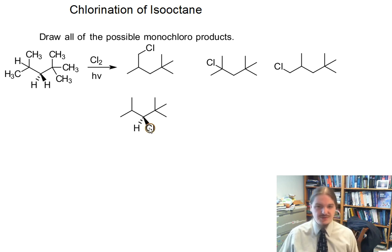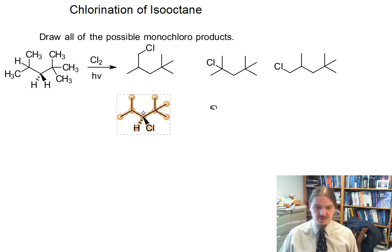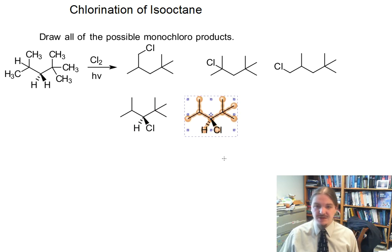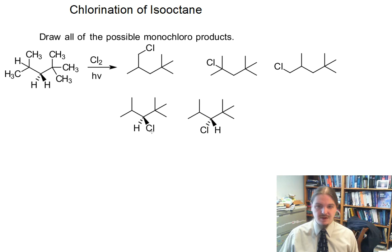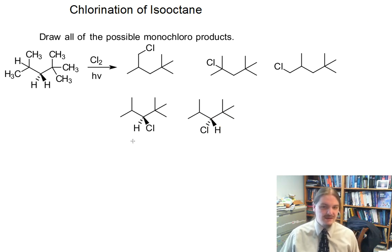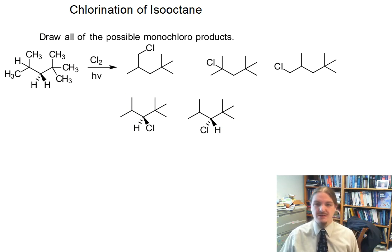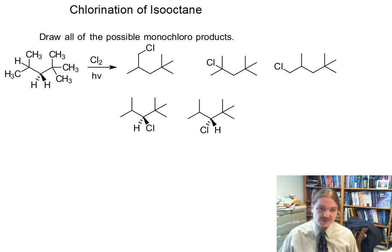Radical reactions do not produce carbocations, so you don't need to worry about rearrangements. Here are two products from our secondary position, and these two are enantiomers of each other. I'll leave you to figure out which one is R and which one is S — it's good practice.